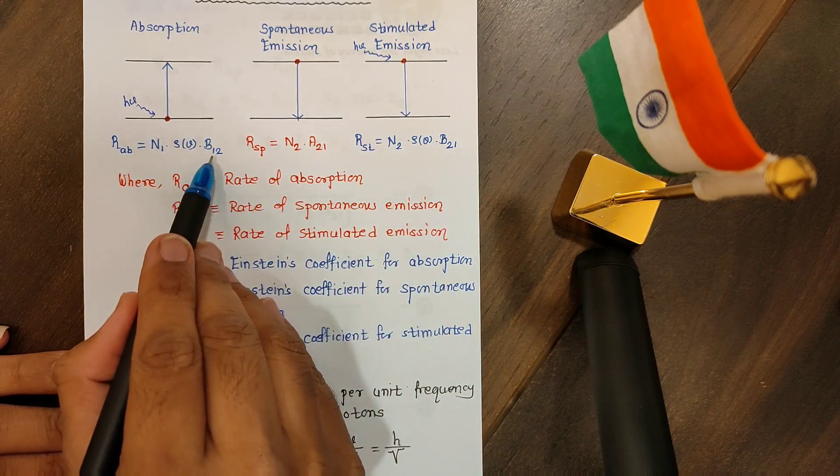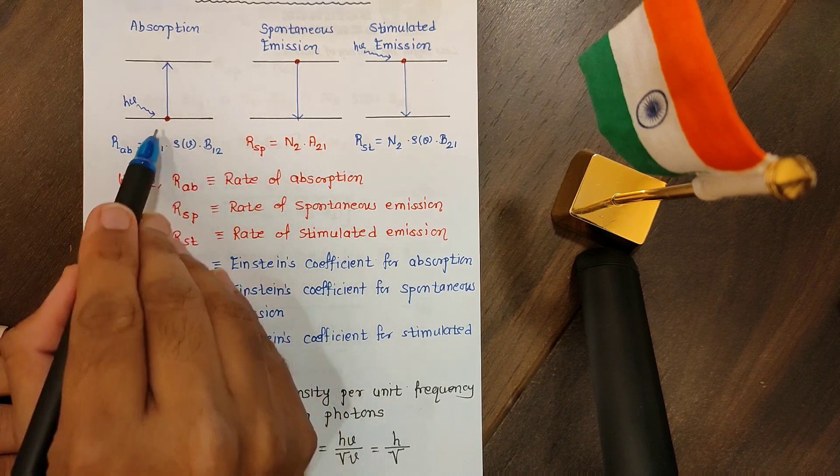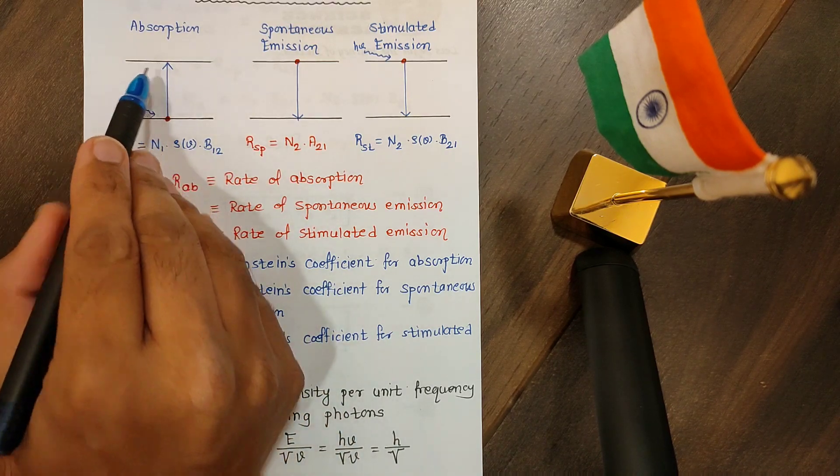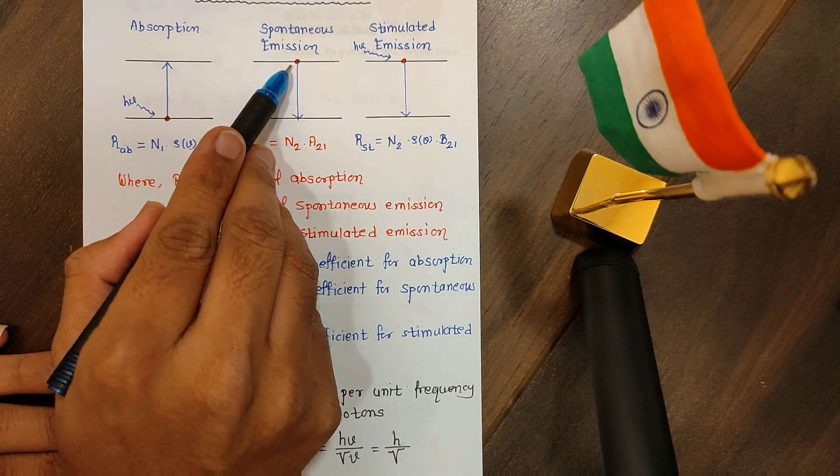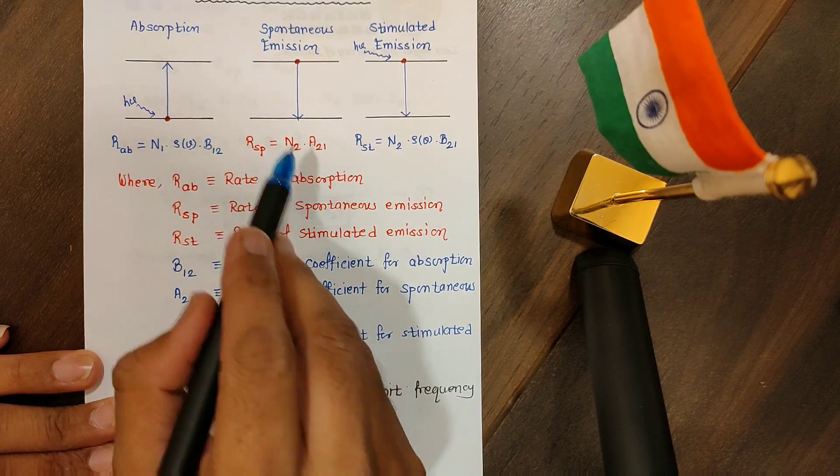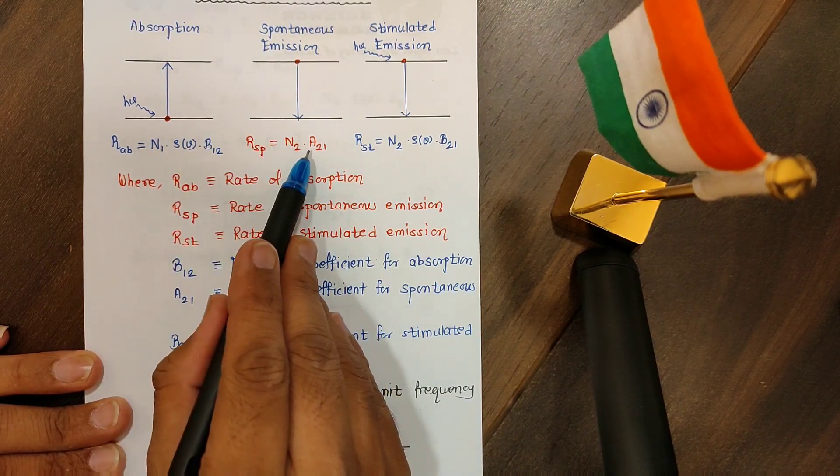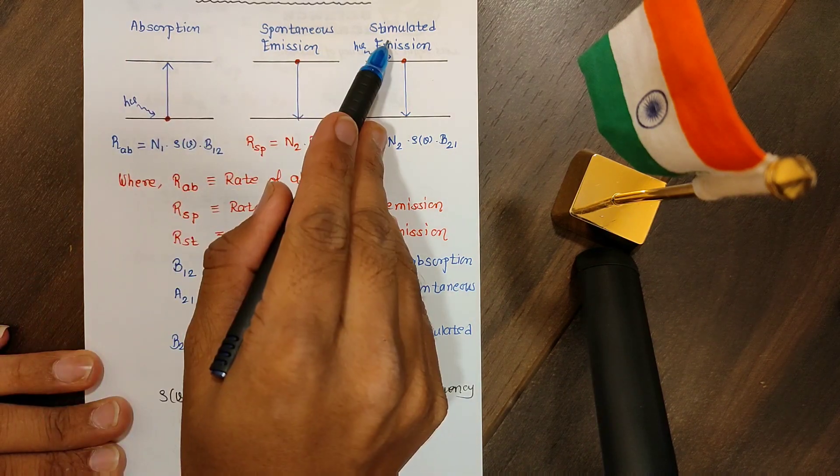But in the second and the third process starts from the top, therefore we are writing n2, which is number of electrons or photons in the upper level. There are three coefficients: b12, a21, b21. Why we are writing 12? Because the transition is from first level to the second level, that is lower level to the top level.